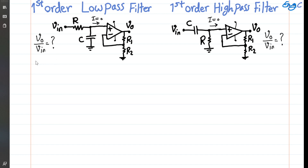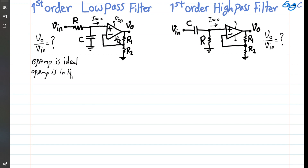In both circuits, we make the assumption that the op-amp is ideal. We also assume that the bias supply voltages VDD and VEE are properly set for the positive and negative supply so that the op-amp is operating in the linear region of operation, not saturated.